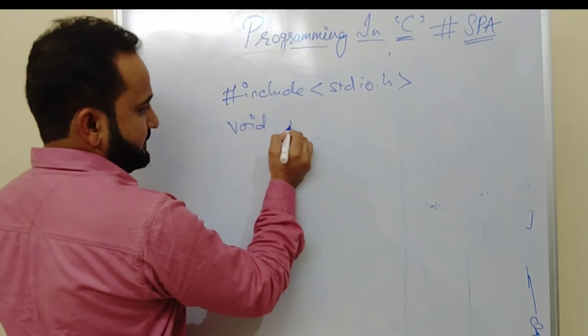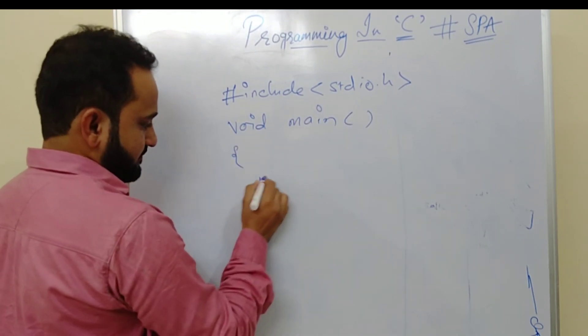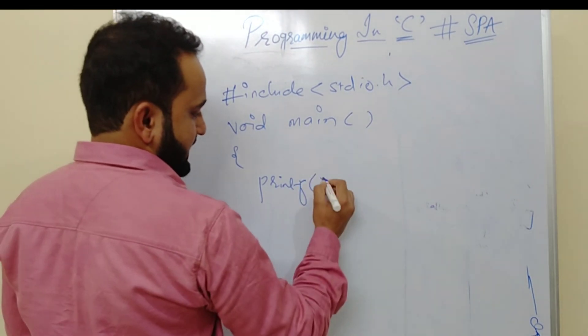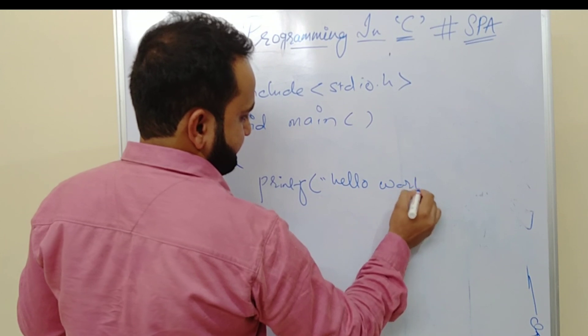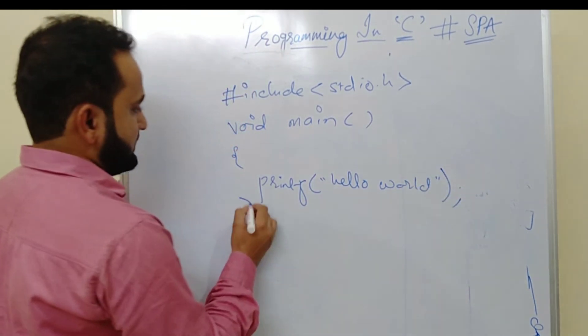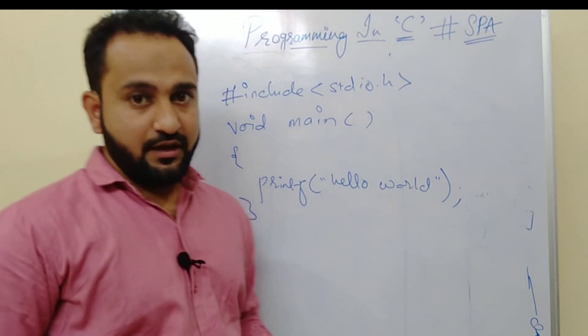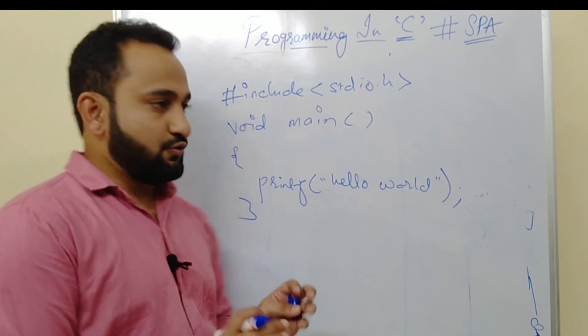We have void main here. Then bracket open, curly bracket open. Then we will write printf, bracket open, double quotes, Hello World, double quotes, bracket close. That's it. That's the basic program. The output of this, Hello World will get printed on screen.